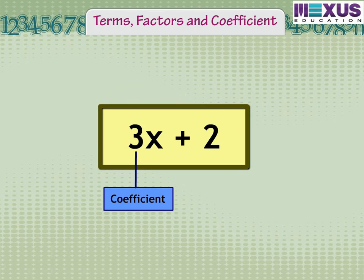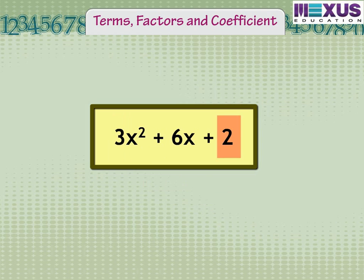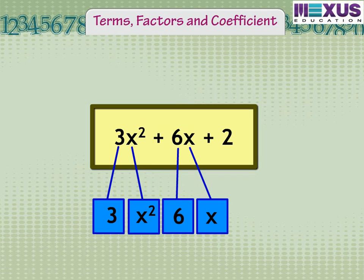The numerical factor of a term is called its coefficient. The coefficient in the term 3x is 3. Now we will see factors. For example, in the expression 3x squared plus 6x plus 2, there are three terms and each term is formed by one or two factors. For 3x squared, the factors are 3 and x squared. Similarly, for 6x, the factors are 6 and x. And the term 2 is made up of just one factor, that is 2.